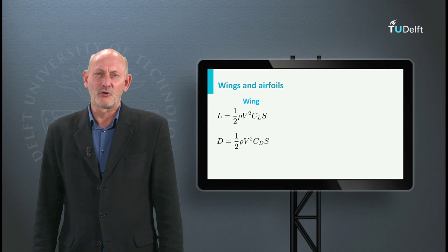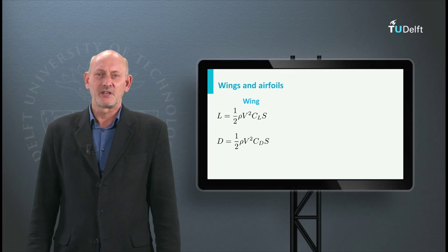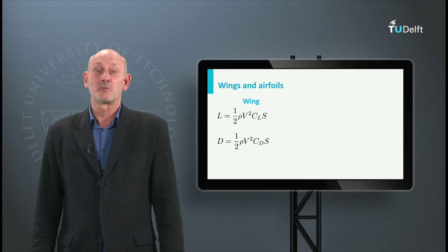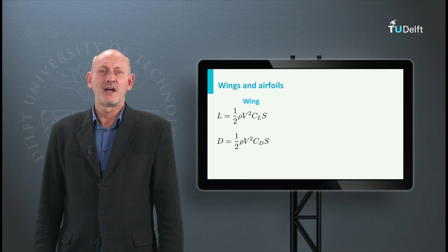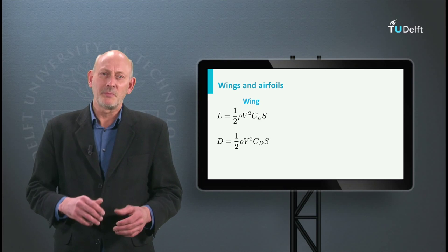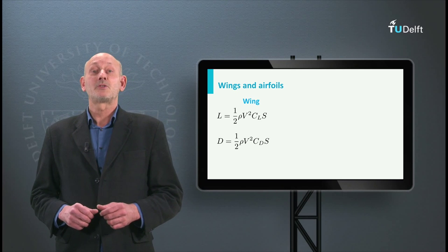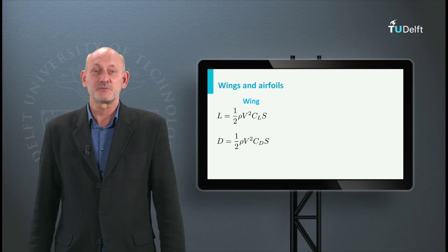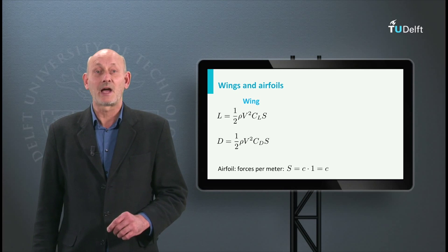The general equation for the lift force on the wing is L is a half rho V squared times the lift coefficient C_L times the wing area S. The same goes for the drag force and the drag coefficient C_D. However, since in the two-dimensional case the wing area is undefined because the span is infinite, we talk about the force per meter span. So S in the two-dimensional case is C times 1.